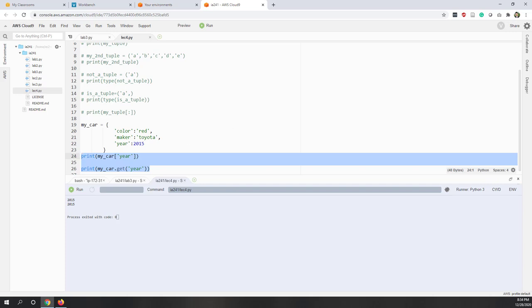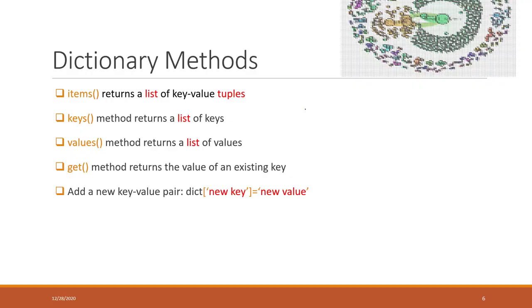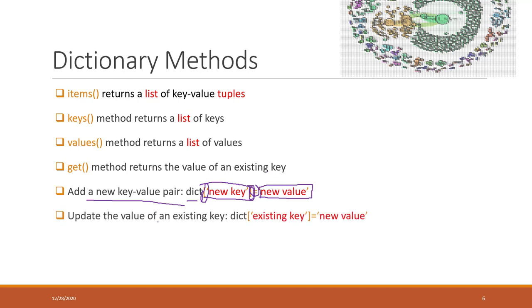To add a new key-value pair to a dictionary, call the dictionary with the new key in square brackets and assign the new value on the right side. To update the value of an existing key, it's the same syntax but using an existing key: dictionary[existing_key] = new_value.